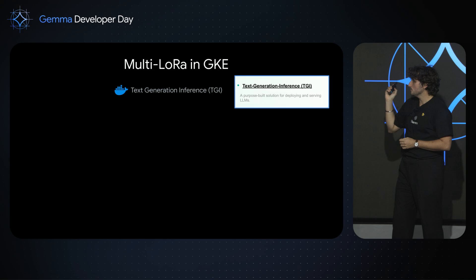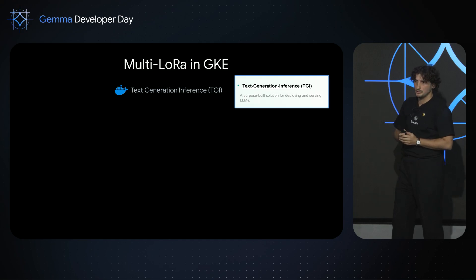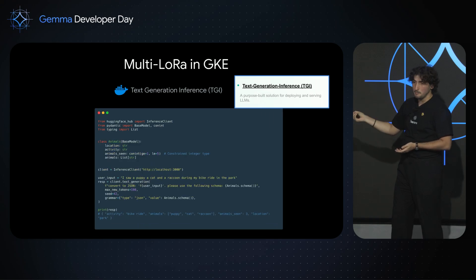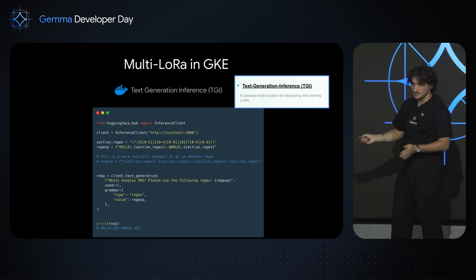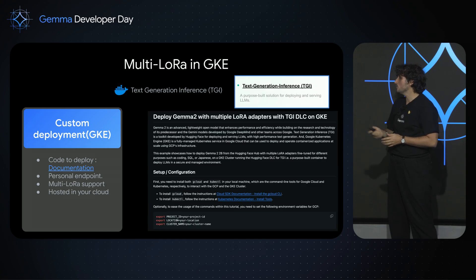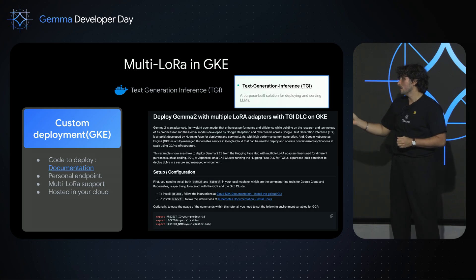There's another option. TGI stands for text generation inference — it's our solution to deploy an LLM into production and serve it. It is a Docker image that comes with very convenient pre-built features. For instance, you have constrained generation: if you know Outlines, this is it — to generate a JSON from a Pydantic definition or even a regex. We built an example on how you can deploy Gemma 2.2b with multiple LoRA adapters onto your Google Kubernetes Engine. This is a straightforward demo that you can find either on HuggingFace or on the HuggingFace GitHub.